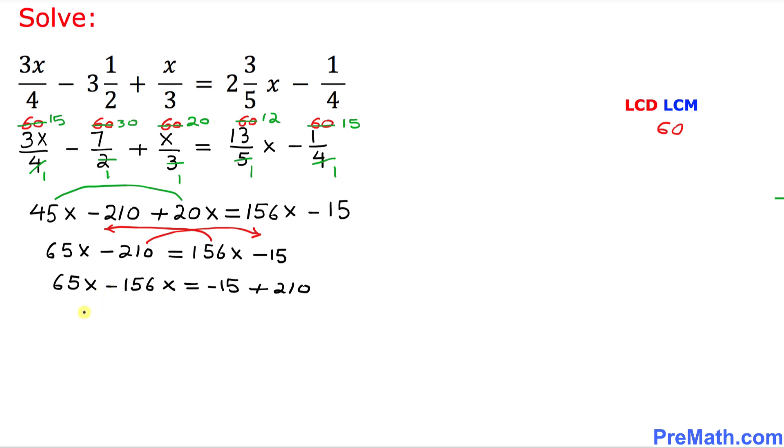Let's simplify this thing. That is going to give us negative 91x equals 195. We want to isolate x, so I am going to divide both sides by negative 91.